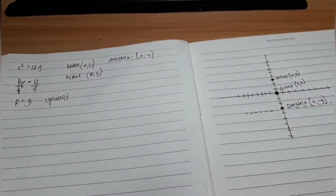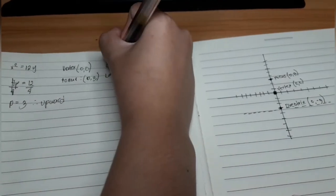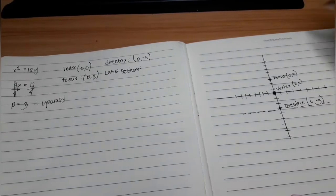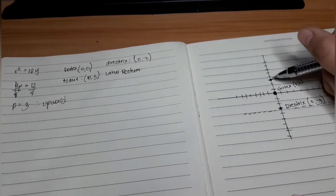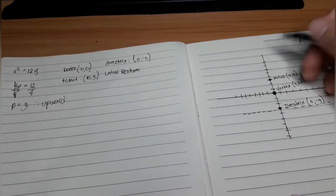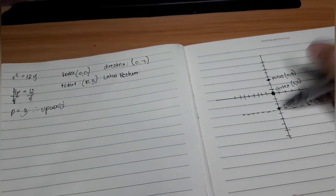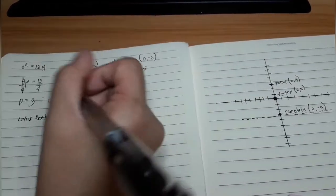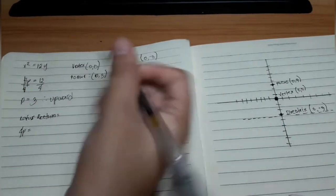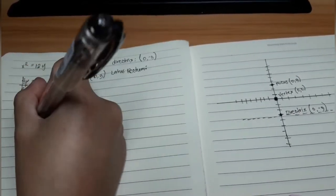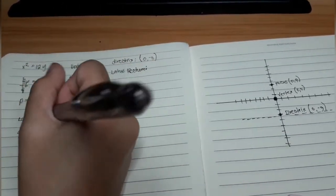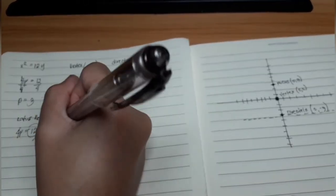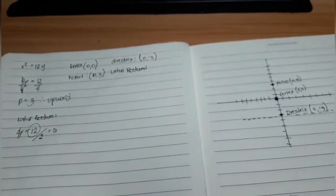We need to find the latus rectum. We all know that the latus rectum is the measurement in focus and also parallel to the directrix. The formula of latus rectum is 4P. Our 4P here is 12, so we need to divide it by 2. We have 6.